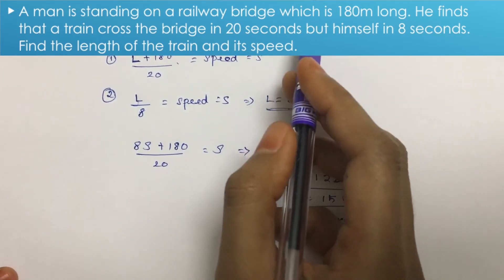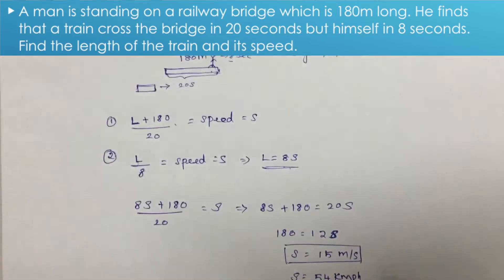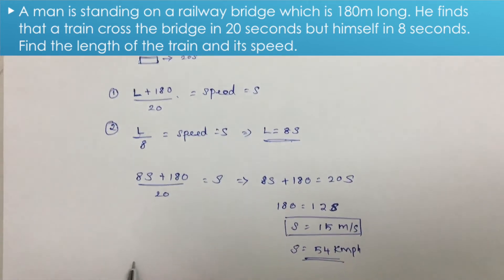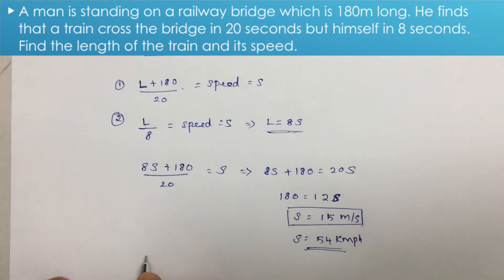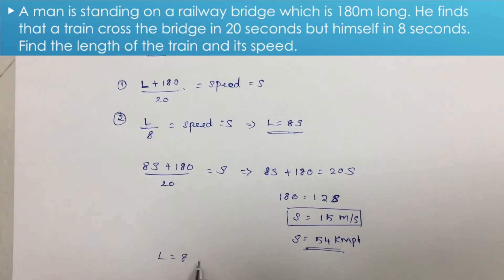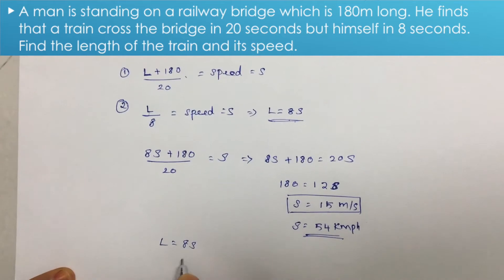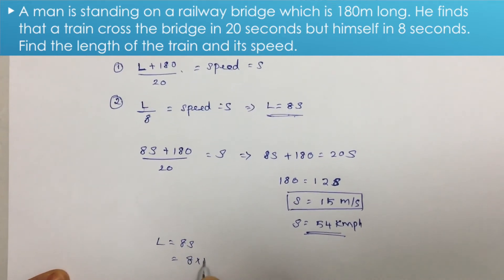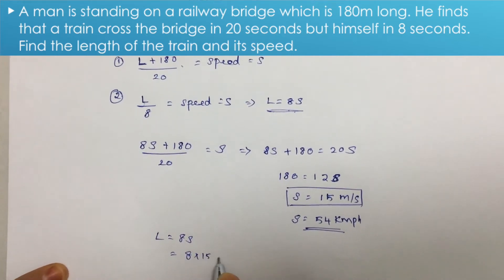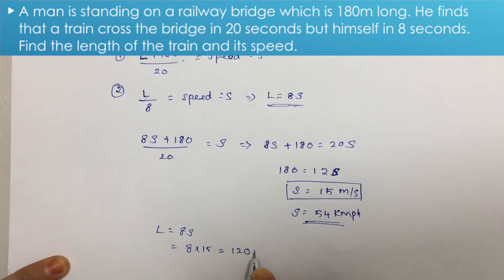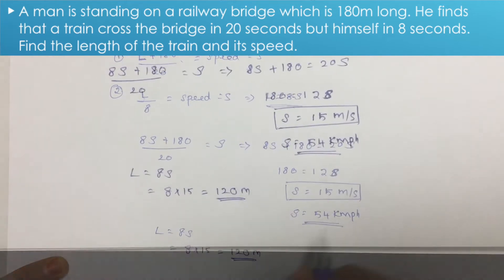Substituting back, L equals 8S equals 8 into 15, which is 120 meters. So the length of the train is 120 meters.